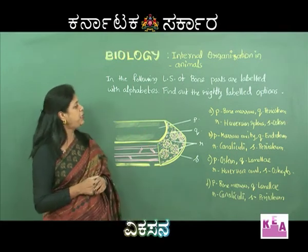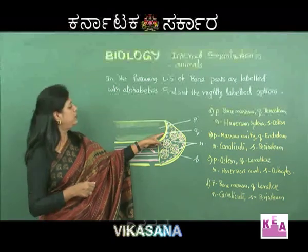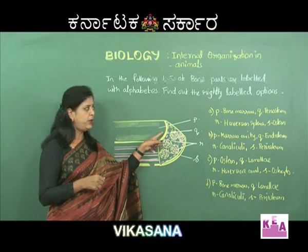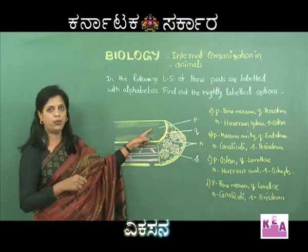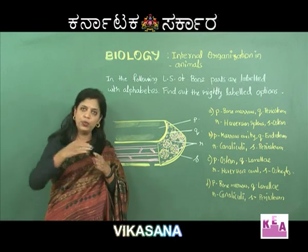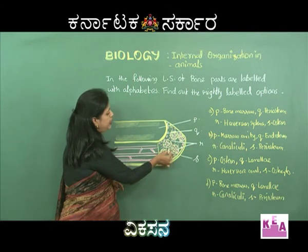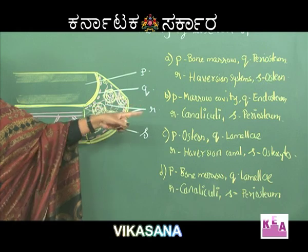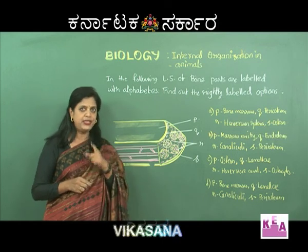Option A: P is bone marrow - correct. Q is periosteum - wrong, because periosteum is the outermost covering and Q appears to be the inner lining. Option B: P is marrow cavity - correct. Q is endosteum - correct, endosteum is the inner lining. The threads visible are canaliculi connecting the lamellae and haversian systems.